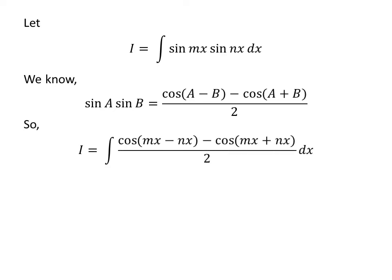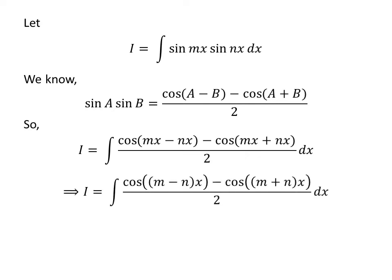I have replaced sin(mx) times sin(nx) in the integral by its value as per the above trigonometric identity. So, I is equal to the integral of [cos(mx − nx) minus cos(mx + nx)] upon 2 with respect to x. Taking out the common factor, we get I equal to the integral of [cos((m − n)x) minus cos((m + n)x)] upon 2 with respect to x.